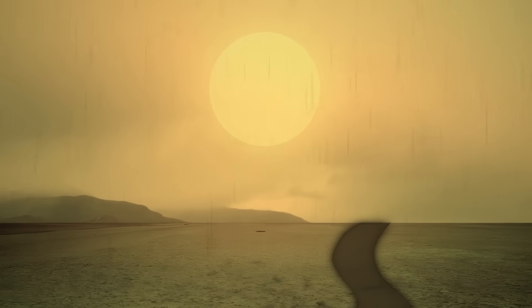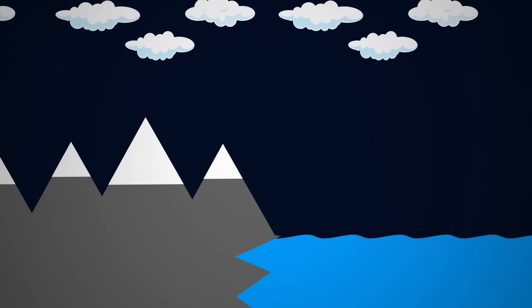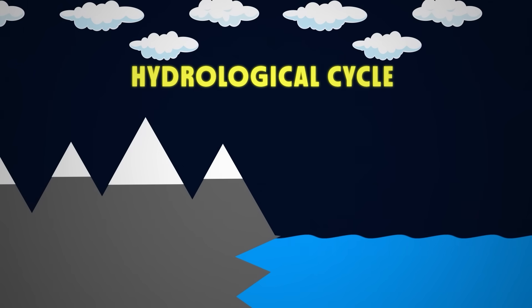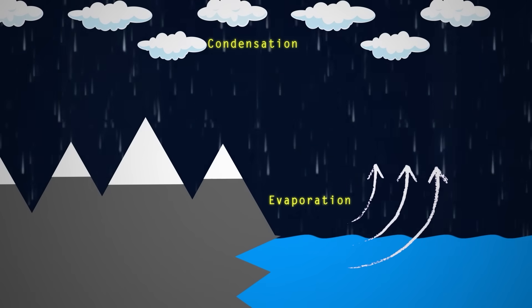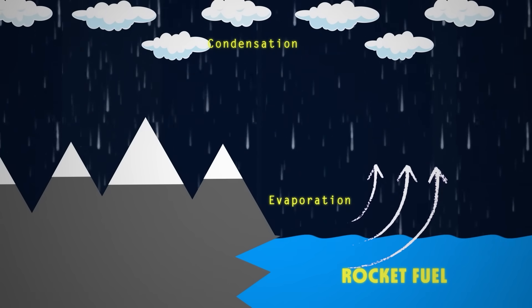The average surface temperature on Titan is negative 179 degrees Celsius, and the freezing point of methane is negative 182. So it is the perfect environment to support a full hydrological cycle of evaporation and condensation, except with rocket fuel instead of water.